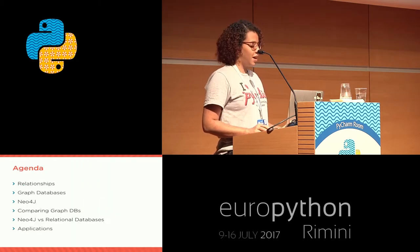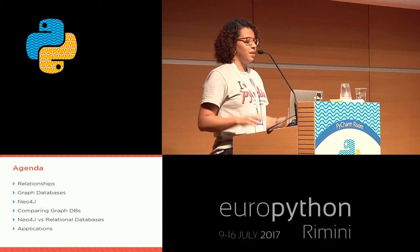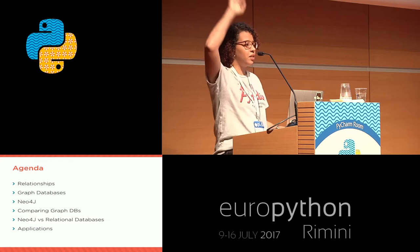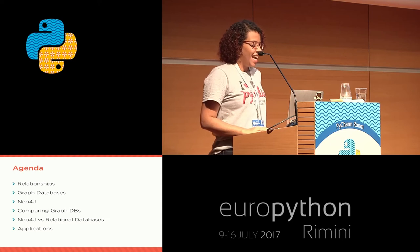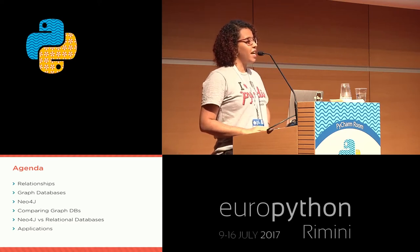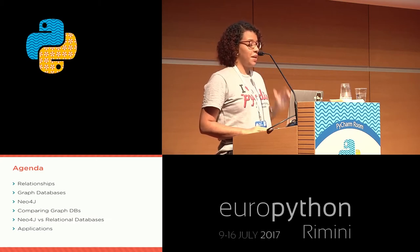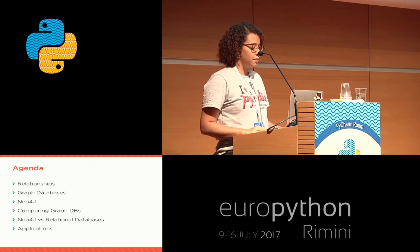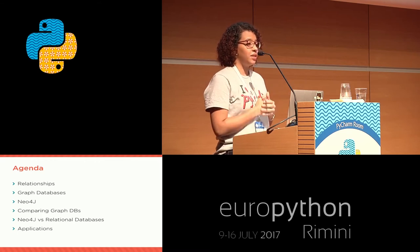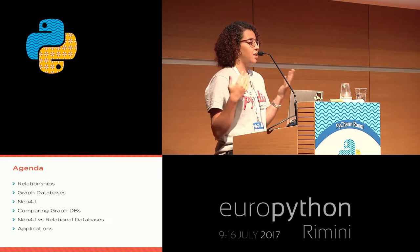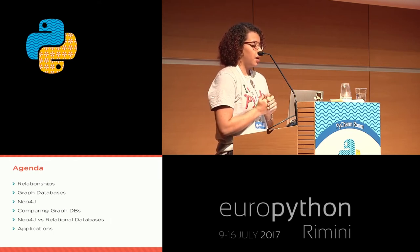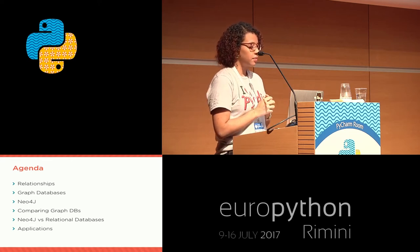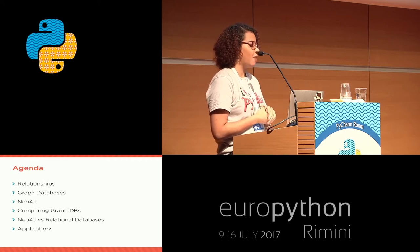About this talk - here's my agenda. I'll start by talking about relationships and what I mean by that. Then I'll introduce the concept of graph databases. Then I'll proceed to talk about Neo4j, the most popular graph database in the industry, comparing it with other available solutions. I'll also do a small comparison between Neo4j and relational databases, since we web developers are used to relational databases. And at the end, I'll talk about some cool applications for graph databases.